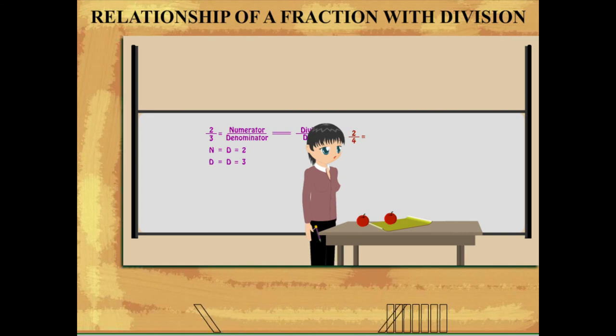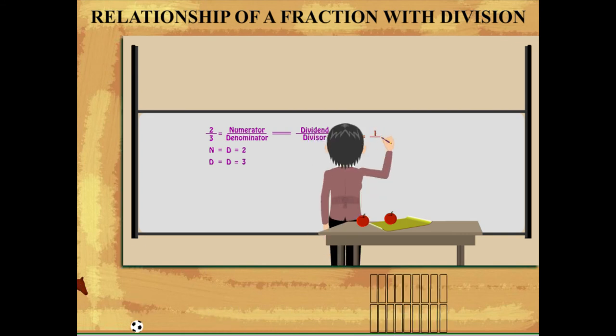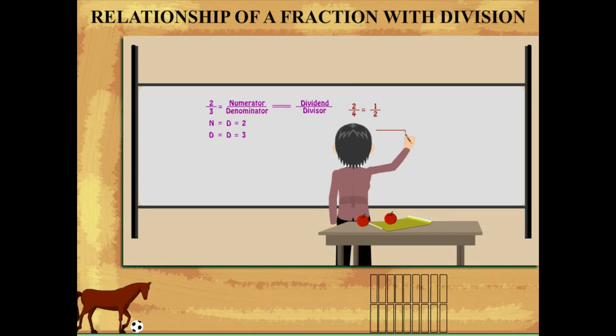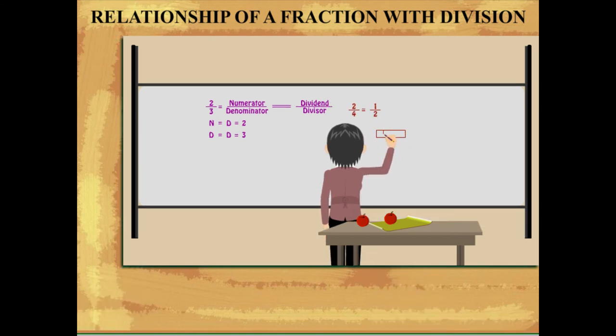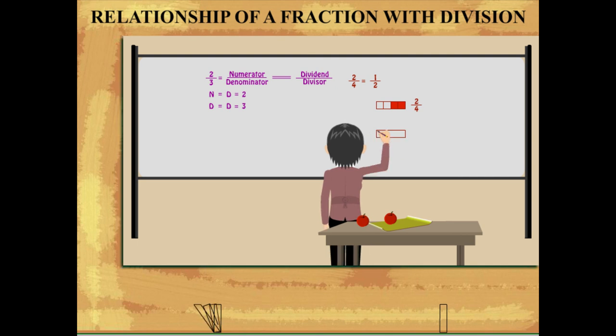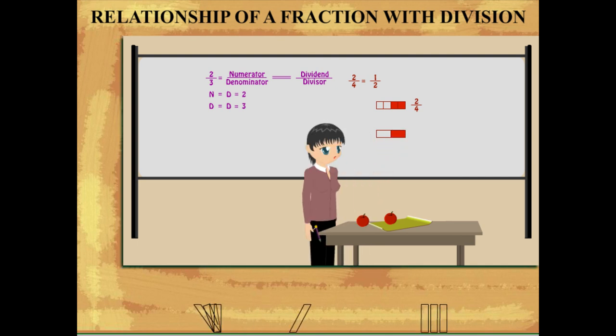The fraction 2 upon 4 is actually 1 upon 2. She makes a rectangle with 4 parts, shades 2 parts and writes 2 upon 4. She makes another equal rectangle and shades 1 part to write 1 upon 2.